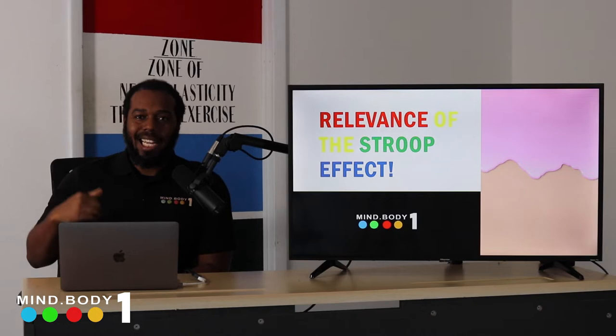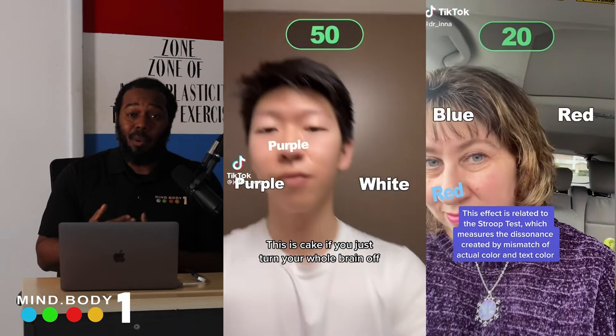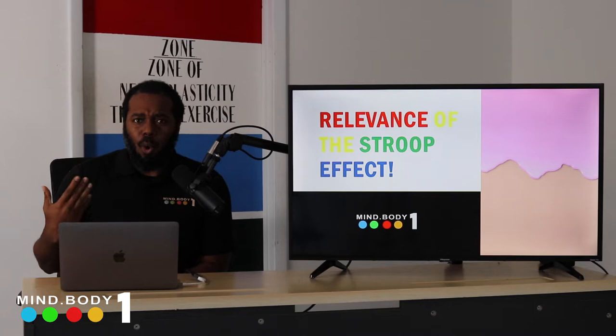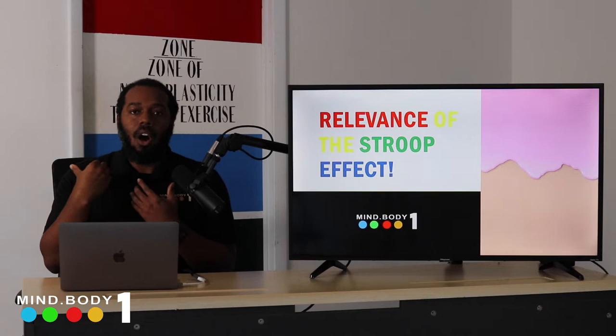Hey, what's up everybody, it's Nick here from MindBody One, and today we're going to talk about the Stroop Effect. This is something in cognitive psychology and it's actually one of the most cited research papers in psychology. I've been told many times that it's a filter on TikTok, showing just how big the Stroop Effect really is. It's been almost a hundred years since the first paper was published by John Ridley Stroop — yes, the Stroop Effect is named after a real person. Let's talk about what it is, how it came to be, and why it's important.